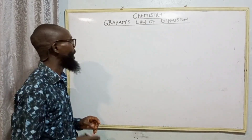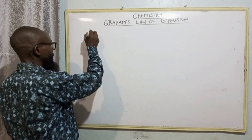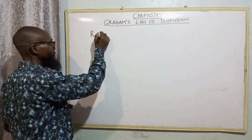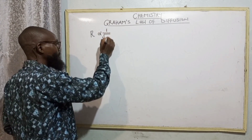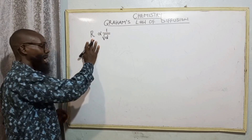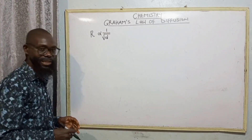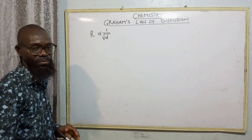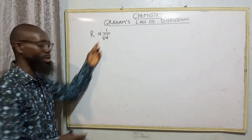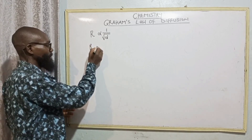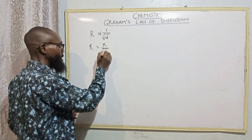Now, mathematically, the rate of diffusion of a gas is inversely proportional to the square roots of its vapor density. Let's use R to represent the rate of diffusion and D to represent density. From here, mathematically, when you remove the proportionality sign, you put a constant: R is equal to K over square root of D.